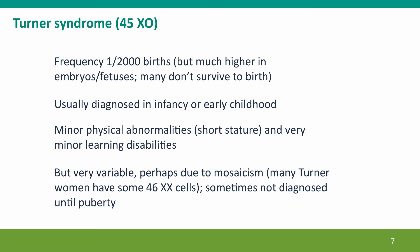The variability may be because of mosaicism — women with Turner syndrome often are found to have some normal cells, some 46 XX cells. Women with large numbers of 46 XX cells may not be diagnosed with Turner's until puberty, because the 46 XX cells are providing more of the normal function. So these defects are very variable.